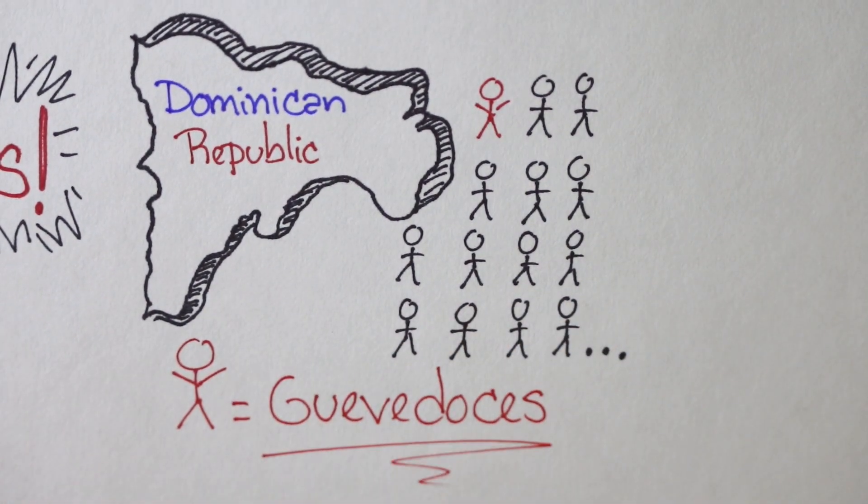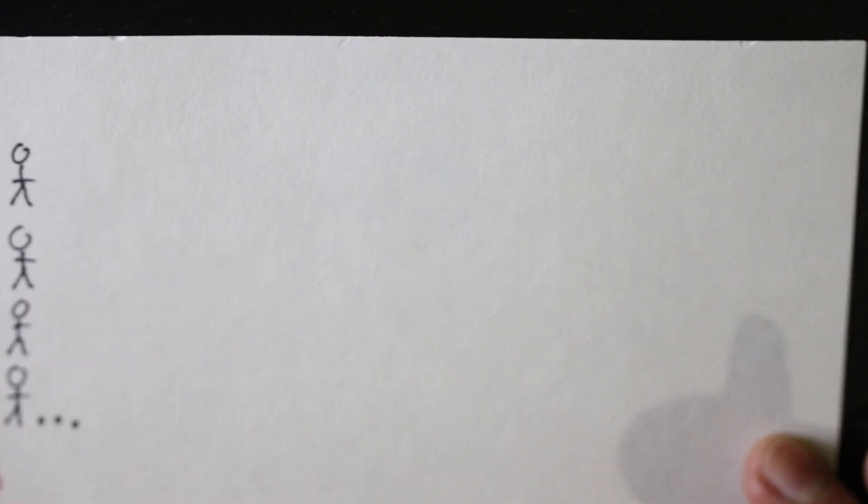In their village, these boys are called huevedosas. This translates to penis at 12.